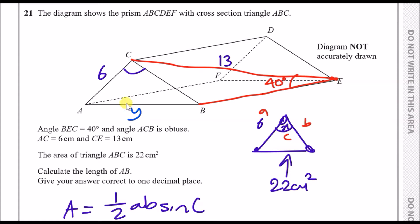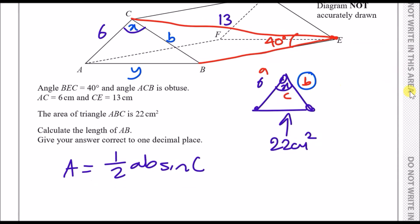Just a quick recap: we call the obtuse angle X, and we call the length CB letter B to match the formula. All we need to do is calculate B first from the right-angle triangle, then find angle X, and from X we can find Y.